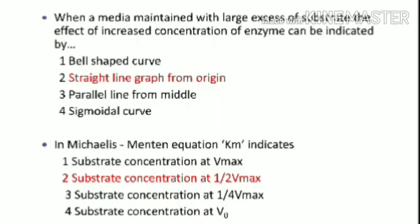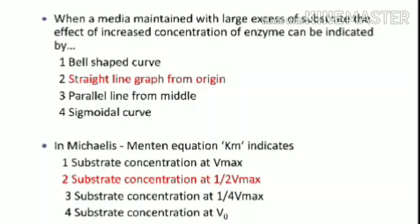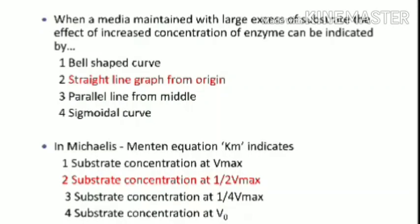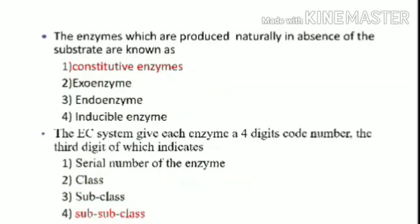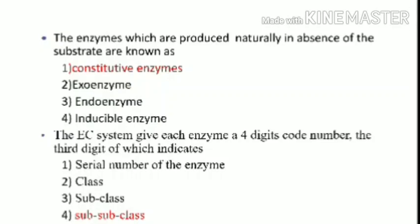In the Michaelis-Menten equation, Km indicates the substrate concentration at half the Vmax — so the second option is correct. The enzymes which are produced naturally in the absence of substrate are known as constitutive enzymes, as they are constitutively produced by the cell. So the first option is correct.